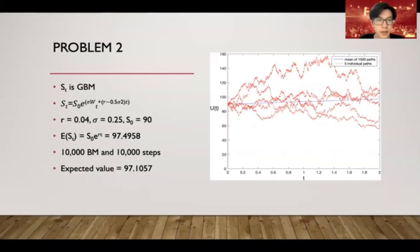Here is problem 2, and according to the problem, the target is to get the expected value of the geometric Brownian motion st. We can see that st is a geometric Brownian motion. Then by the definition, st is equal to this equation. This one is the solution.